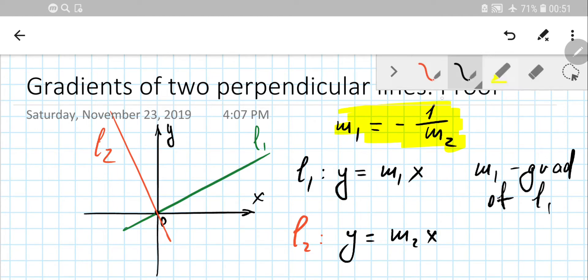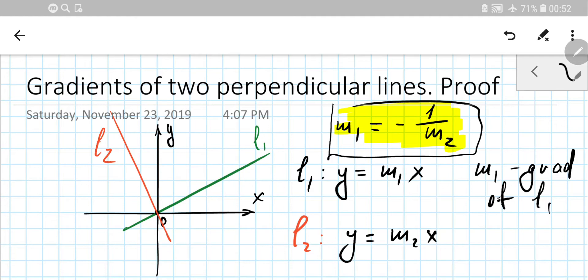Actually, that doesn't have any influence on this formula, how the gradients are connected. It'd still be valid for any lines, no matter what they are. You can make just a simple translation, linear transformation, in order to transfer both lines and their point of intersection to any point on the Cartesian plane. All right, so now let's work on that proof.